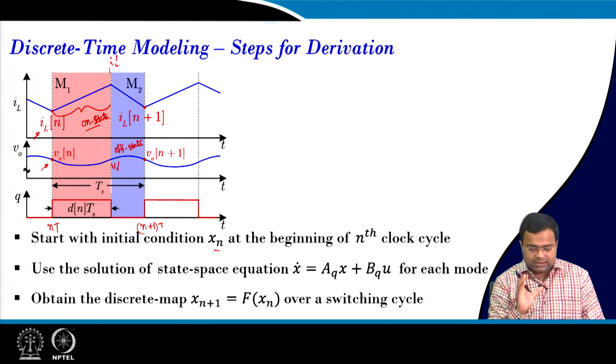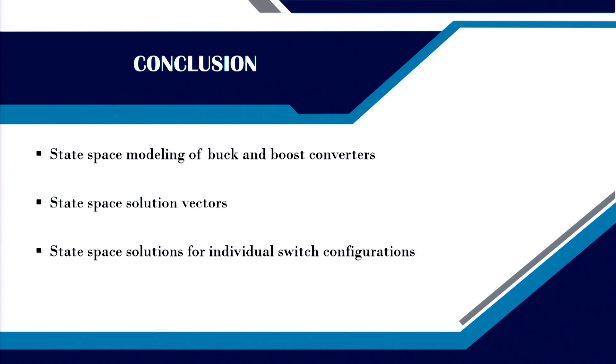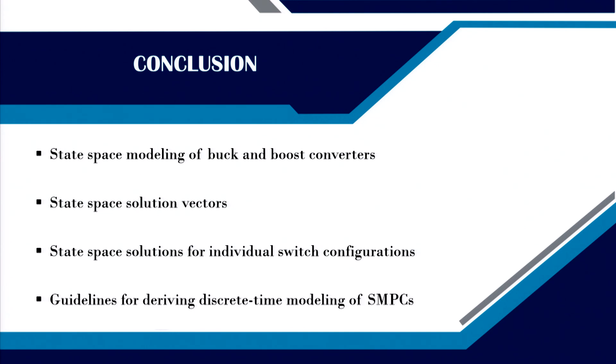These are just the steps, and that will continue in the next lecture. In summary, we have discussed state-space modeling of buck and boost converter, state-space solution vectors, state-space linear solution for individual switch configuration, and guidelines for deriving the discrete time model of switch mode power converters. In the next lecture we will derive the complete discrete time model of DC-DC converter under digital control.